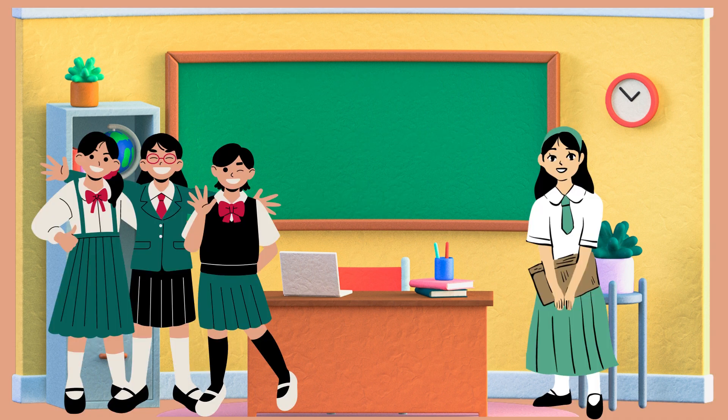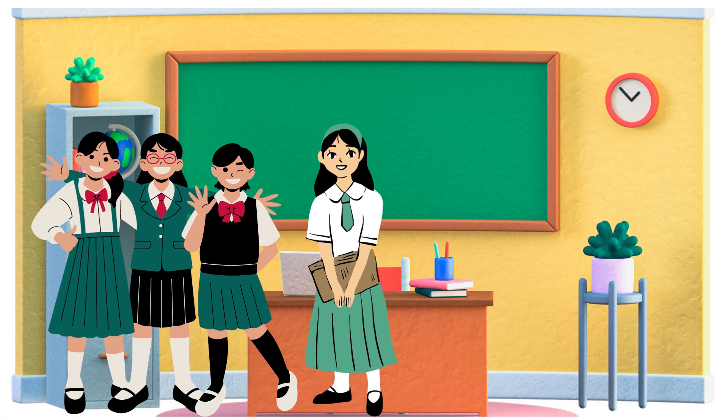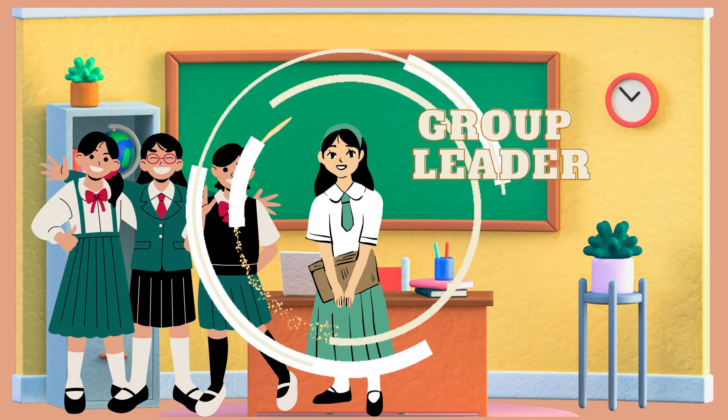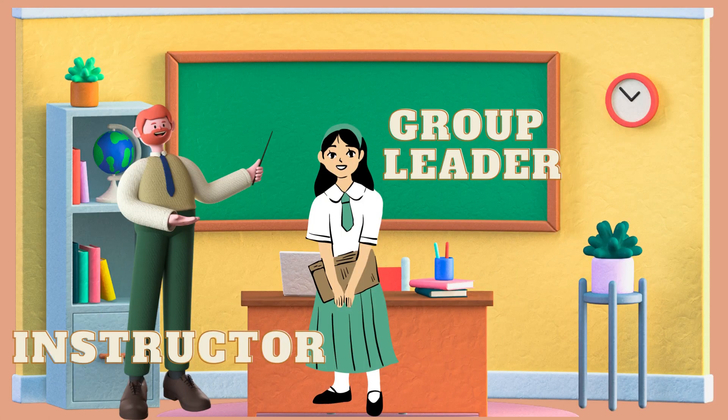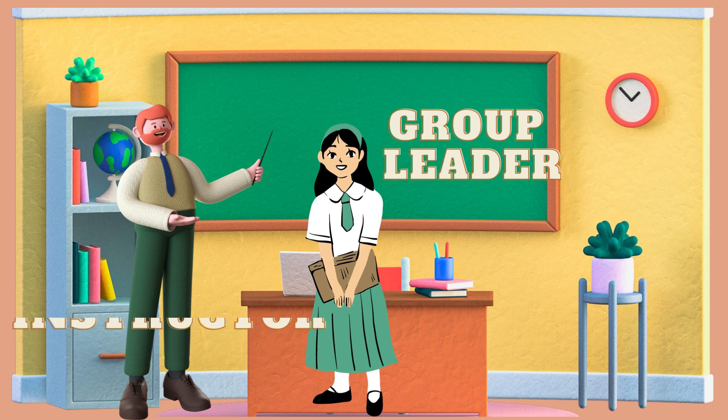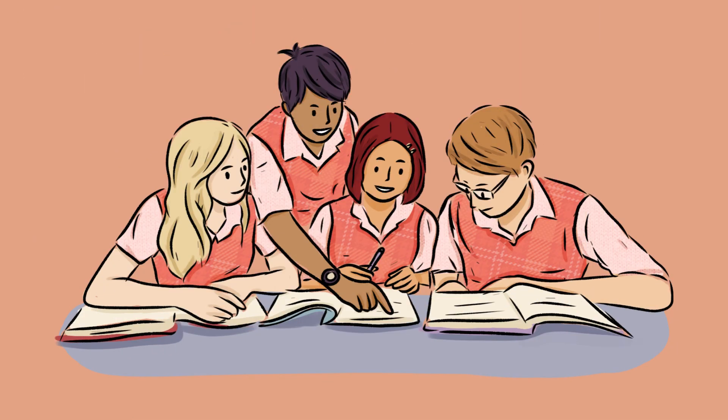The project can be conducted individually or in groups of maximum four. Within each group, a group leader must be selected. The group leader will be the direct line of communication between your group and the instructor. Please note that all group members must play an equal role in the project. If anyone fails to do so, it is the group's responsibility to report him to the instructor.